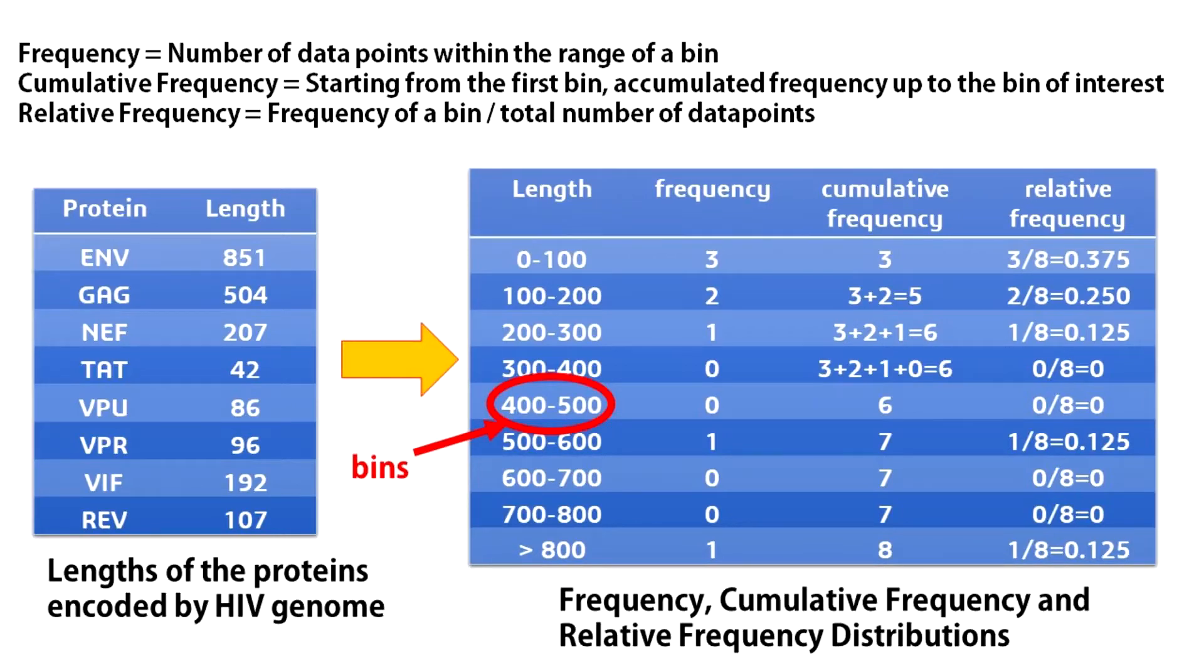Relative frequency is also very simple. For any given bin, its relative frequency is the frequency of that bin divided by the total number of data points.